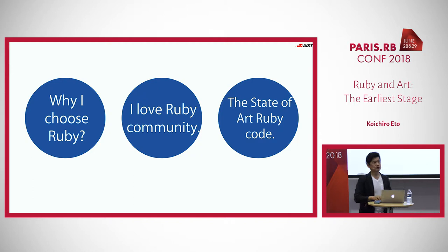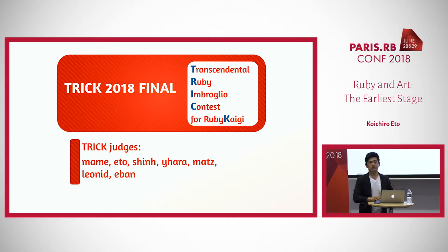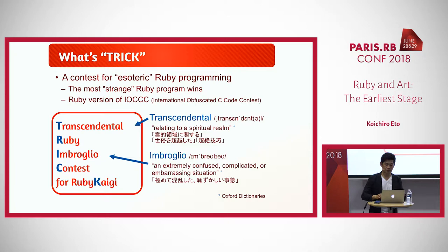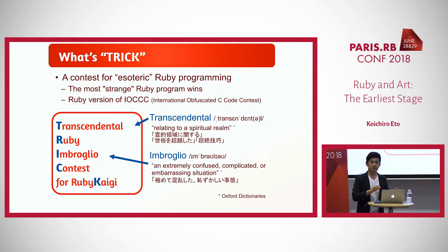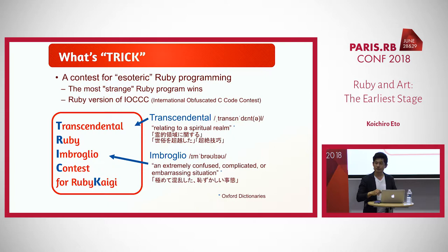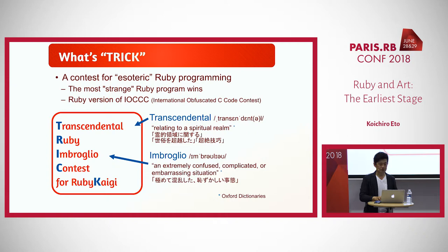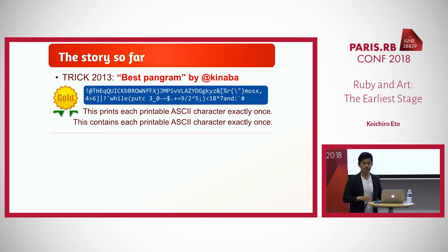I'd like to show you one example of state-of-the-art Ruby code. This year we held a contest called Trick — a contest of esoteric Ruby programming. Do you know esoteric programming languages? In C, there is a contest called IOCCC. This is a contest for strange programs — you cannot read the program, but the computer can run it. We have held this contest three times, and this is the third contest. I'd like to show you some examples.